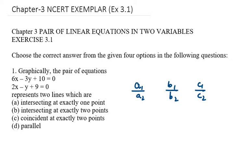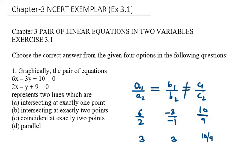Here a1/a2 = 6/2, b1/b2 = −3/−1, and c1/c2 = 10/9. Simplifying: 6/2 = 3, −3/−1 = 3, and 10/9 remains as a decimal. So a1/a2 = b1/b2 but is not equal to c1/c2. This is the inconsistent condition — no solution — and the graph will be a pair of parallel lines. The correct option is D.